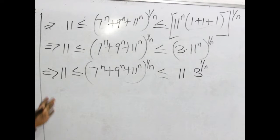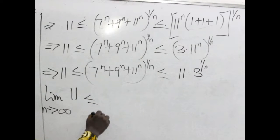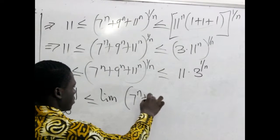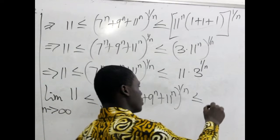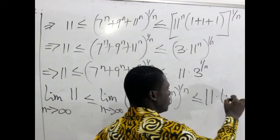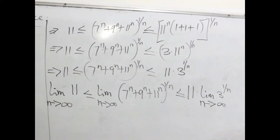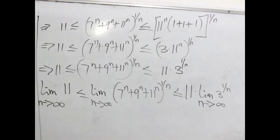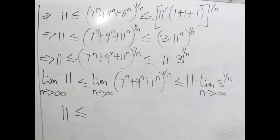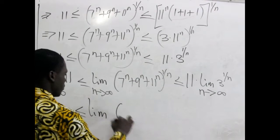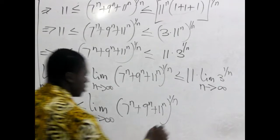At this point we find the limits of each term. The limit of 11 as n approaches infinity is 11, since a constant's limit is the constant itself. For the middle term, we don't yet know so we write it as is. For the upper bound, we take the limit of 11 times 3 to the power 1 over n as n approaches infinity, noting that 1 over n approaches 0 as n approaches infinity.